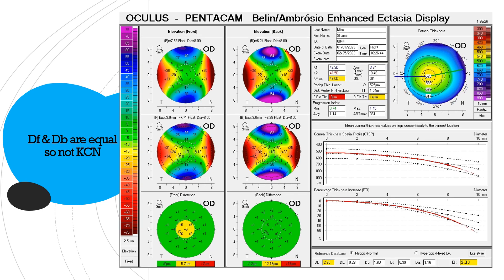Here is another example where only DF — the front elevation — is suspicious. All others are normal and total D is slightly normal. The Belin lines are not leaving the dotted lines, and not leaving the dotted line in the PIT either. K max is slightly high and back elevation is slightly in the suspicious range. So this is a suspicious case, but not frankly a full-fledged keratoconus.